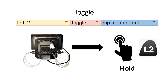Toggle is another output function and also fairly easy to understand, but it's super important as it gives you a lot of advantages in certain games. If I set a center puff to toggle L2, when I blow into the center sip and puff it will hold down the L2 button in the game, and when I blow into it again, it will release the button — so I don't have to keep holding down the input.